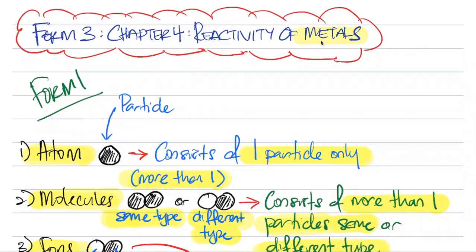Students, Form 3 Chapter 4: Reactivity of Metals. Because there is the word metals there, in this topic you'll be hearing a lot of names like molecules, ions, atoms, compounds and all that. So we would like to do an introduction and I would like to explain to you all a little bit about these names. These names basically you have already learned in your Form 1, so let's go into one by one.